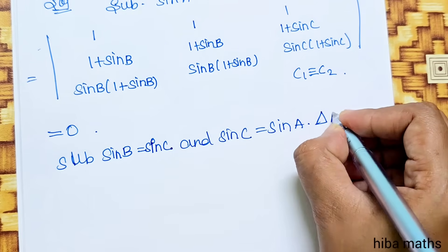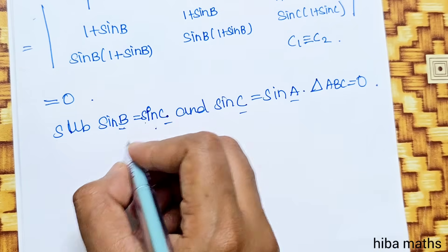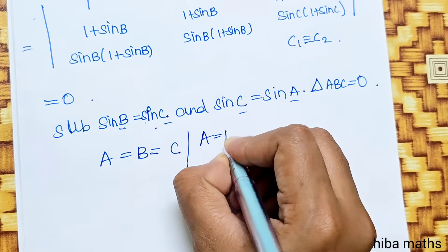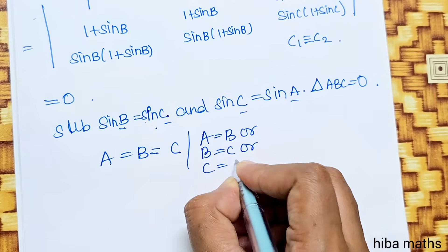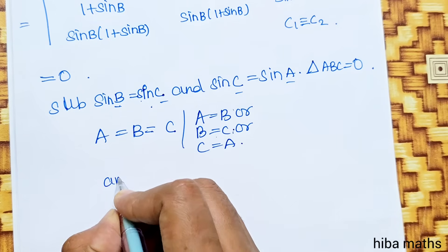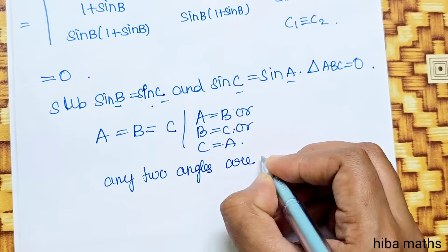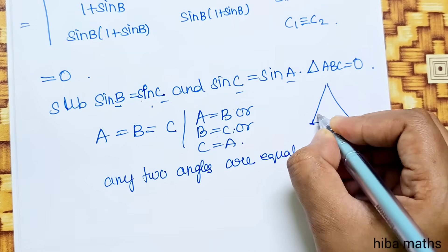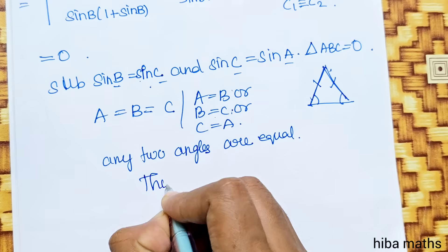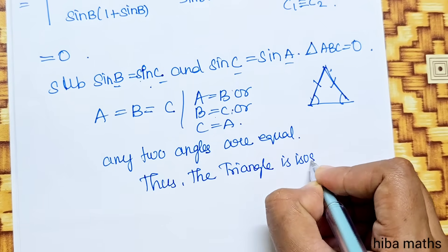From triangle ABC values: when all angles theta satisfy sin θ equal to sin θ, we get A equal to B, which equals C. This means A equals B, or B equals C, or C equals A — two angles are equal. Therefore the corresponding sides are equal, and the triangle is isosceles.